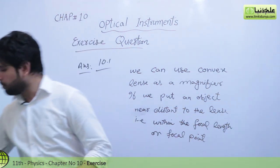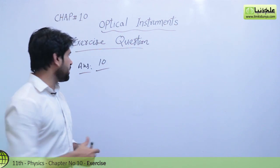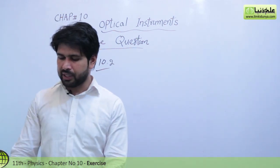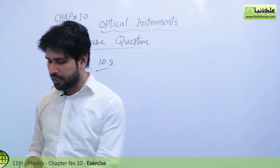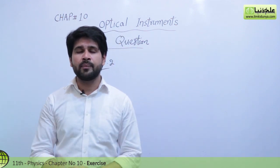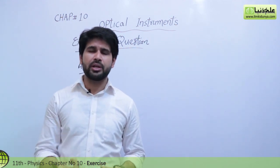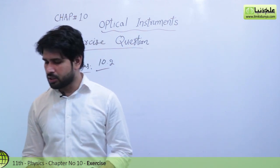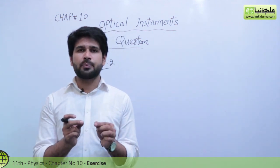Next question is 10.2: Explain the difference between angular magnification and resolving power of an optical instrument. What limits the magnification of an optical instrument? Simply, you have to write their definitions first. Angular magnification, as defined in the book, is the ratio of the angle subtended by the image when we see through the optical device to the angle subtended at the eye when we see the same object without that instrument.